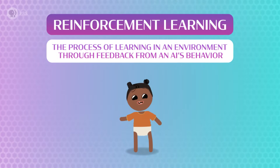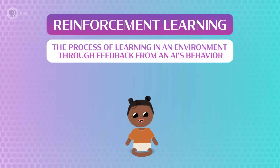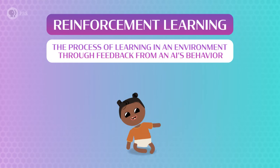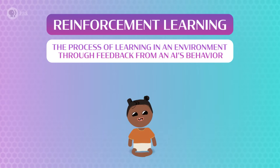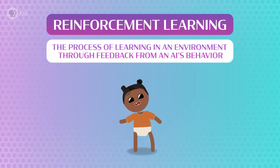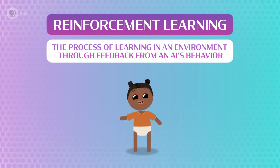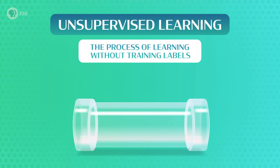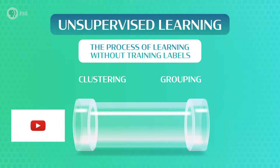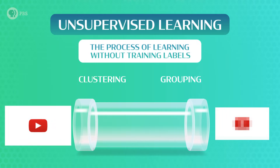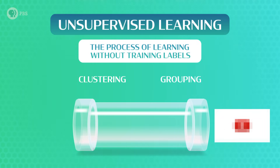Reinforcement learning is the process of learning in an environment through feedback from an AI's behavior. It's how kids learn to walk — no one tells them how, they just practice, stumble, and get better at balancing until they can put one foot in front of the other. Unsupervised learning is the process of learning without training labels — it could also be called clustering or grouping. Sites like YouTube use unsupervised learning to find patterns in frames of video and compress those frames so that videos can be streamed to us quickly.